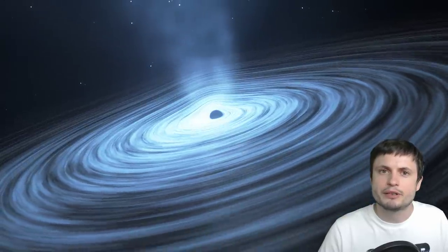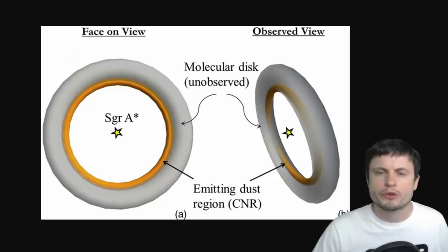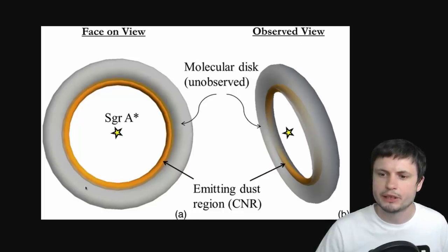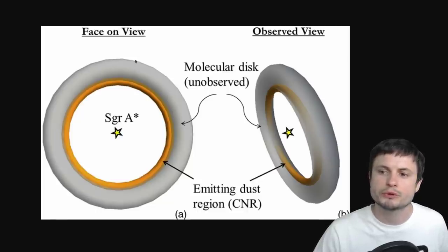It talks about the so-called circumnuclear region or the circumnuclear disk that you can kind of see right here. And we believe that our black hole has it as well. We just don't really see it because of the perspective from which we're looking at our own black hole.